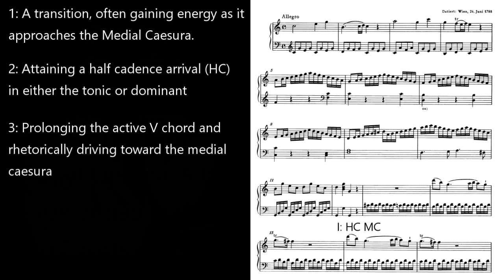Third, the prolongation of this still-active V chord with a rhetorical drive to the MC. In 545, Mozart increases the rhythmic energy and even adds a very slight dissonance with the use of 5-6-4 chords. 5-6-4 is how I notate a cadential second inversion passage, which is a common pre-cadential gesture that a composer of this period would have considered a dissonance.